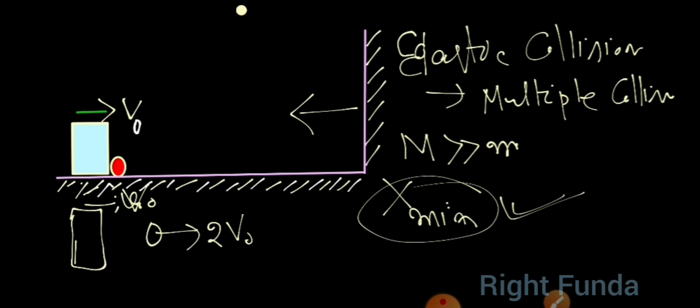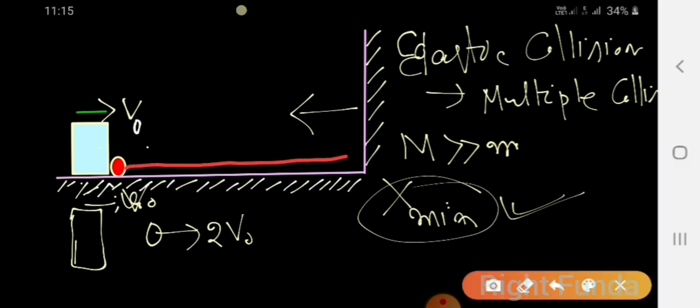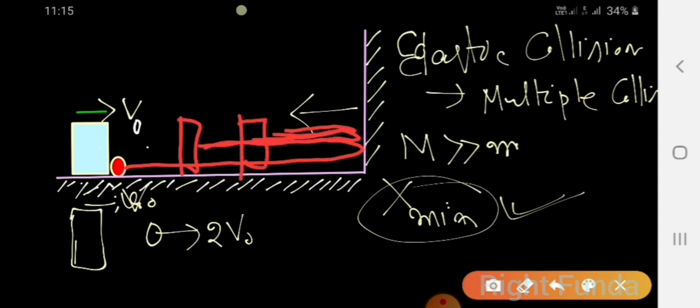The decrease in block velocity per collision is very small because M is very large. But over multiple collisions we cannot neglect the cumulative change — the velocity keeps decreasing. Eventually, the block's velocity reaches zero, and at that point the minimum distance of separation occurs.